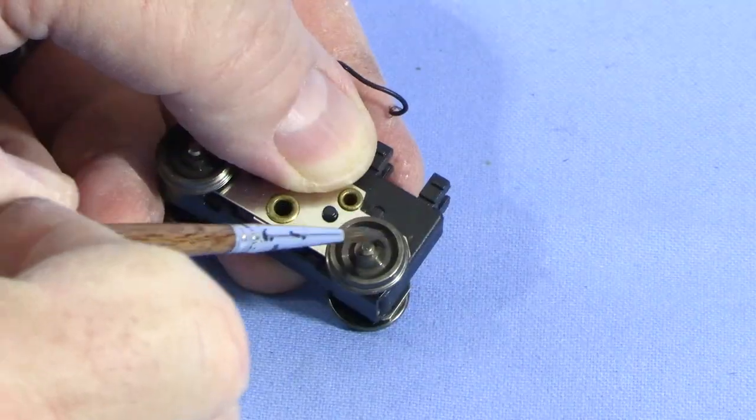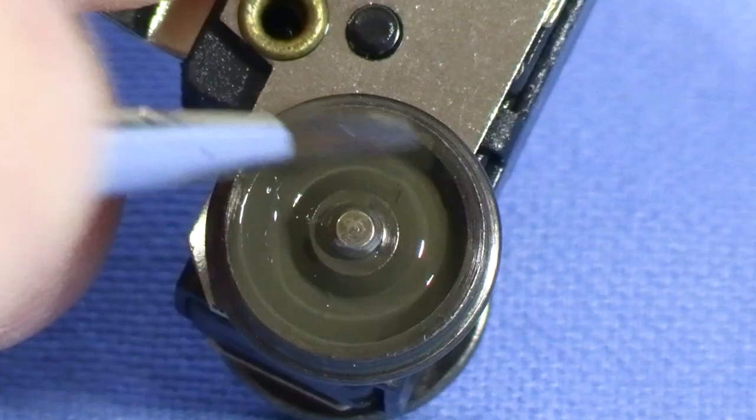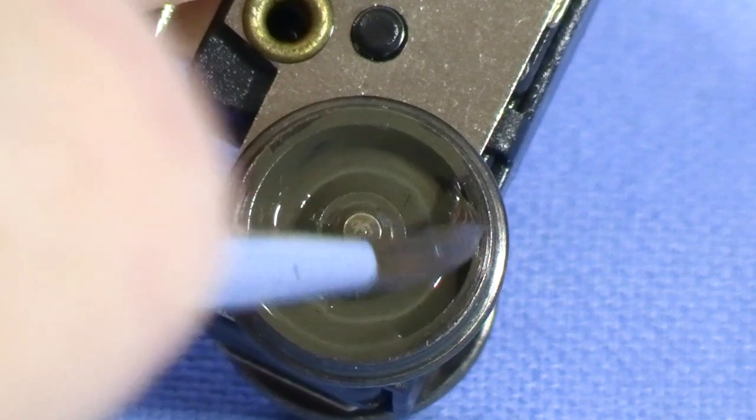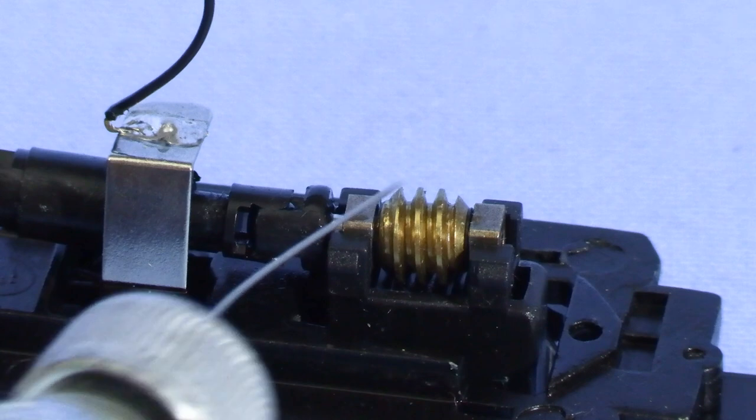This next step is optional, but it falls under the easier to do it now while the model is apart category. I'm going to paint the wheel faces with some Testers railroad tie brown, though any medium to dark brown would work. Now I can reassemble the model.